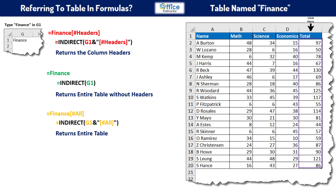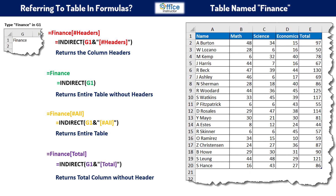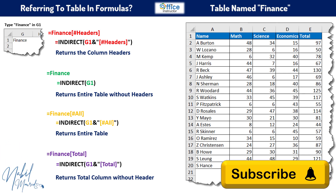If you type an equal sign, then point to the top of any column, when you see the black down-pointing arrow, click once — it will select the entire column excluding the headers. If you click twice, it will select the header as well. Alternatively, use the INDIRECT function to reference any part of a table in your formulas and functions.